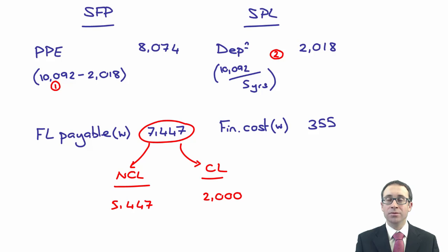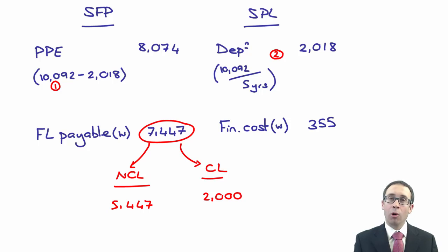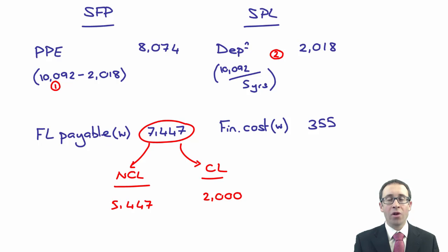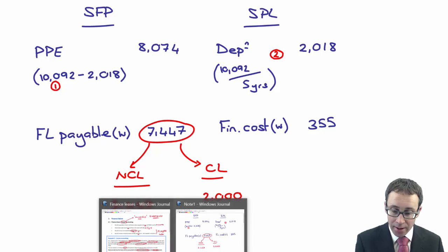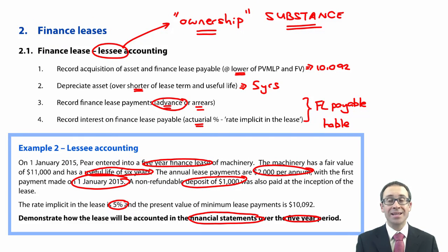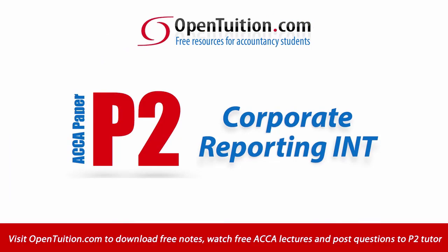Provided you can do that, you won't have any problems with the computation aspect of a finance lease question at P2 level. However, at P2 level you more than likely have to discuss whether or not something is a finance lease or an operating lease as part of a discursive aspect of question 2 or question 3. That's it for finance leases from the lessee's perspective. In the next video we'll look at finance leases from the lessor's perspective.